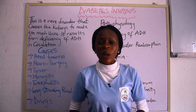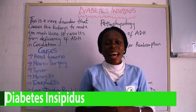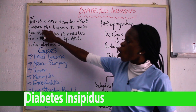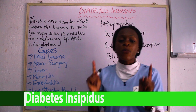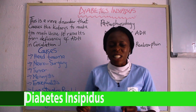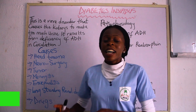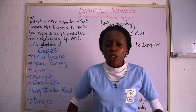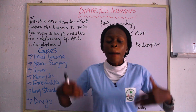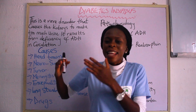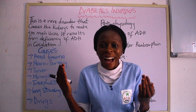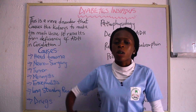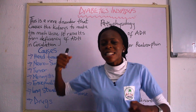Today we are going to be talking about diabetes insipidus. Diabetes insipidus is a rare disorder that causes the kidney to make too much urine. The similarity between diabetes insipidus and diabetes mellitus is the fact that polyuria is present — that is, too much urine. But diabetes insipidus is not as popular as diabetes mellitus. Diabetes mellitus is the common one we see in the hospital. Diabetes insipidus is rare.